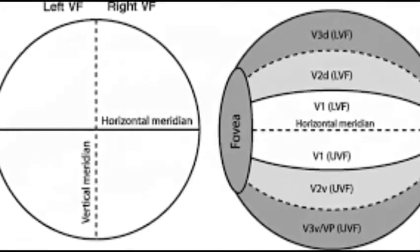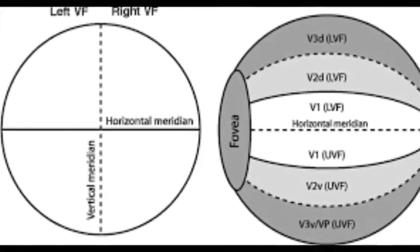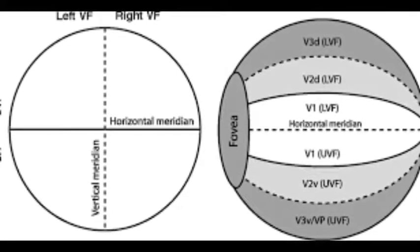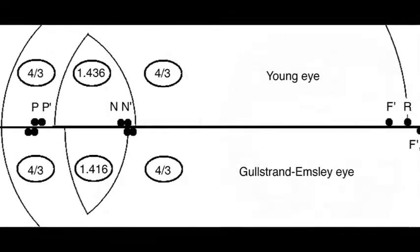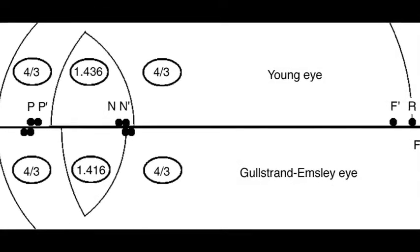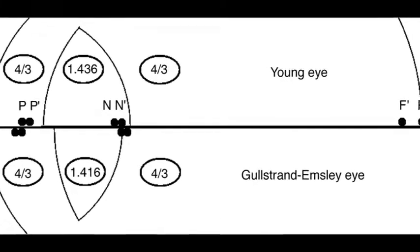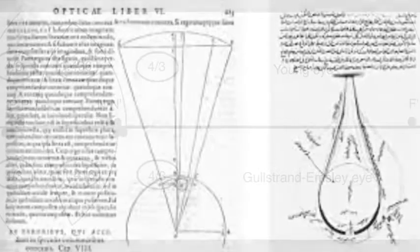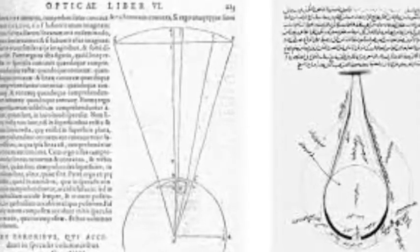This simple modification allowed for a complete measurement of the eye's ability to focus along various fields of vision. With this simple change, not only was Thomas Young able to measure his astigmatism, but he was the first to map the normal visual field.